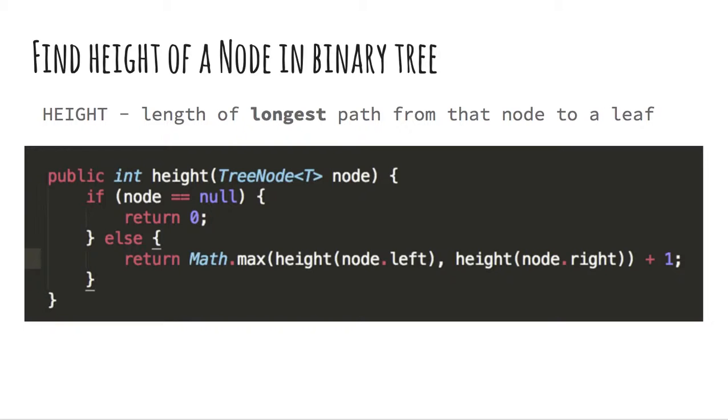Now, let's look at some piece of code which helps us to find the height of a node in a binary tree. The height of a node is the length of the longest path from that node to a leaf. Again, this code is done recursively. In this method, we use the math.max method because the definition of height is the length of the longest path from the node to the leaf.